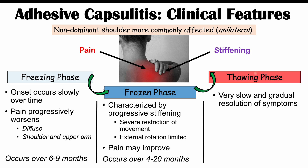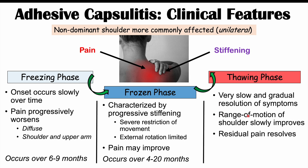The thawing phase is where there is very slow and gradual resolution of symptoms. The range of motion of the shoulder slowly improves, and any residual pain resolves during this phase. This phase occurs over five to 26 months. These are the general average timelines for the freezing, frozen, and thawing phases, though individual cases may differ.